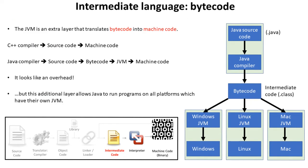The example we're going to look at here is Java. This is a language which generates an intermediate code known as bytecode, and it's one of the most commonly accepted and used forms of an intermediary language.